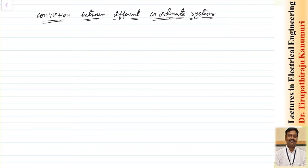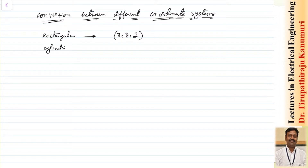The different coordinate systems we have seen are: first, the rectangular coordinate system, where the coordinates are x, y, and z. After that we have seen the cylindrical coordinate system, where the coordinates are rho, phi, and z.